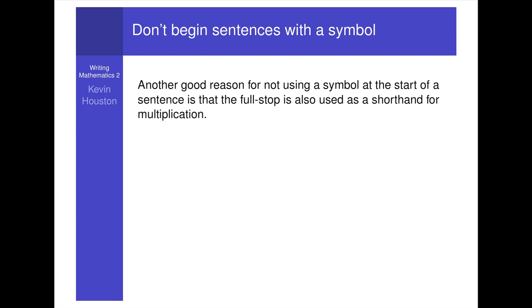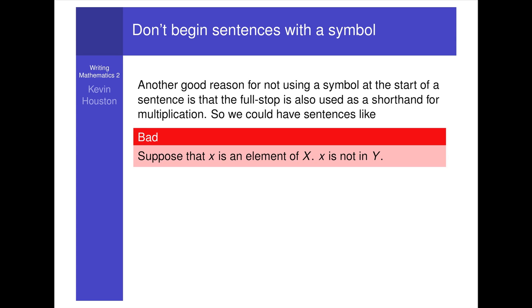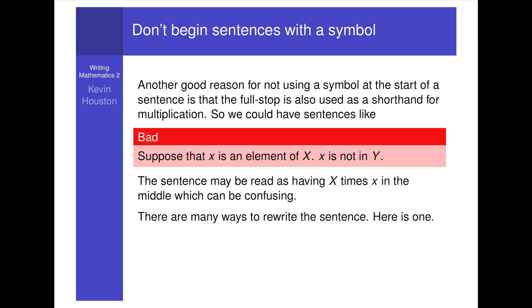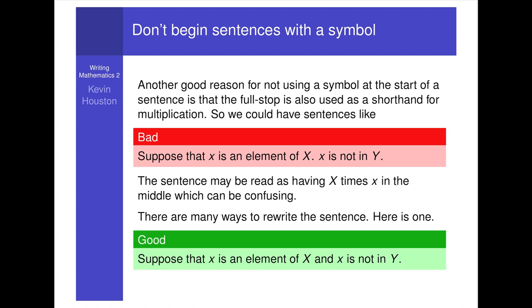Another good reason for not using a symbol at the start of a sentence is that the full stop is also used as a shorthand for multiplication. So we could have sentences like, suppose that X is an element of X dot X is not in Y. The sentence may be read as having X times X in the middle, which can be confusing. There are many ways to rewrite the sentence. Suppose that X is an element of X and little x is not in Y.